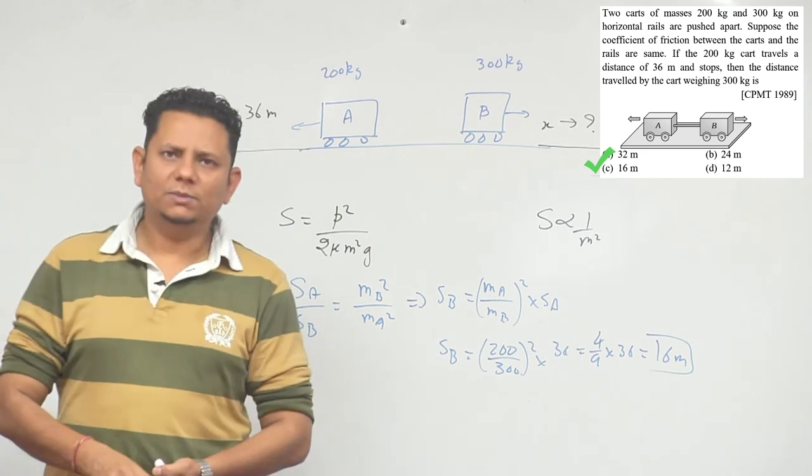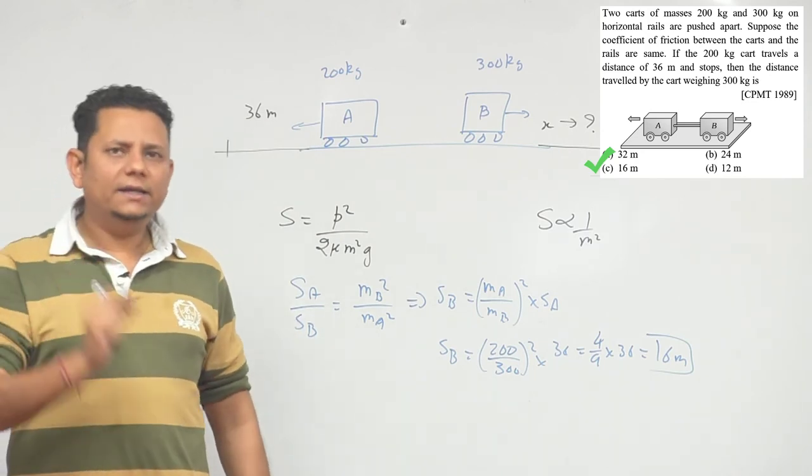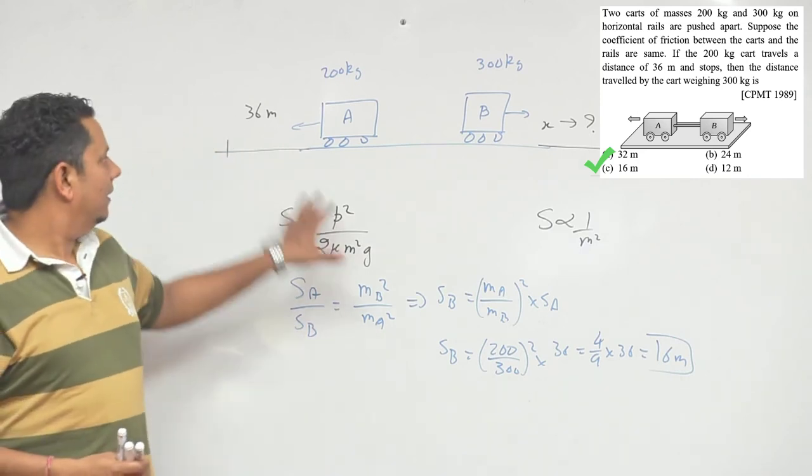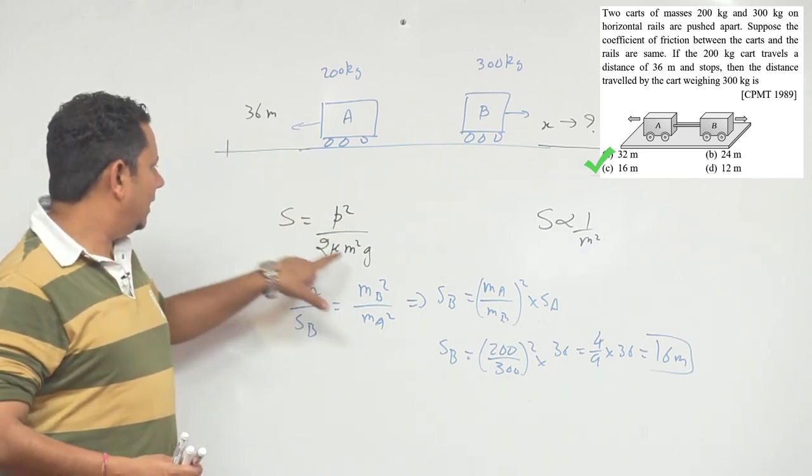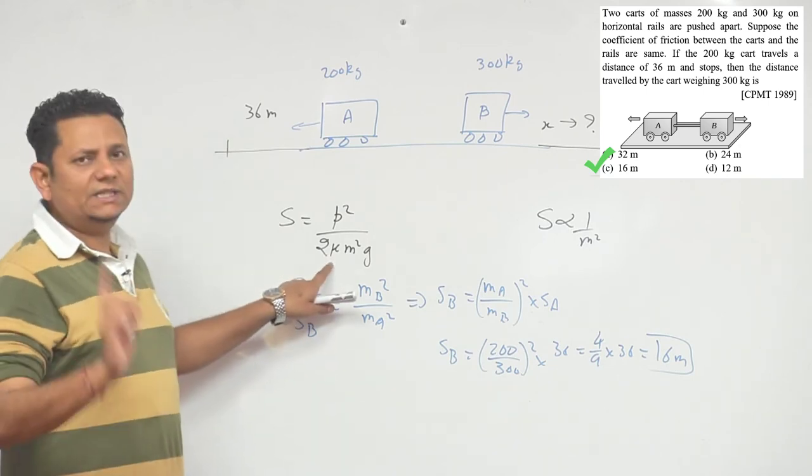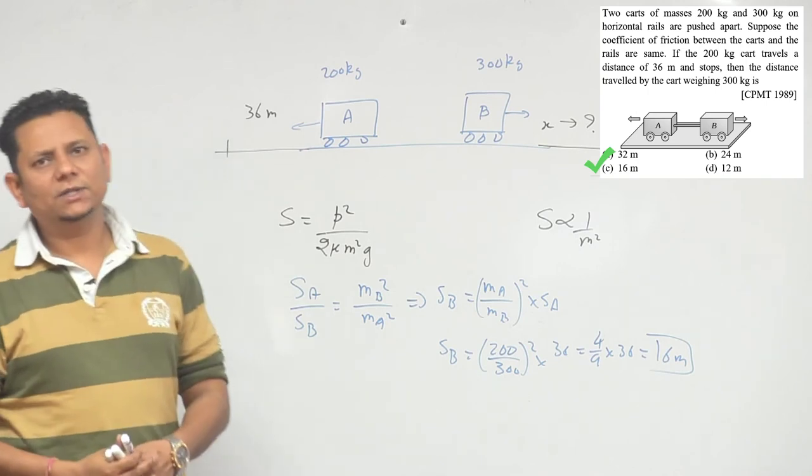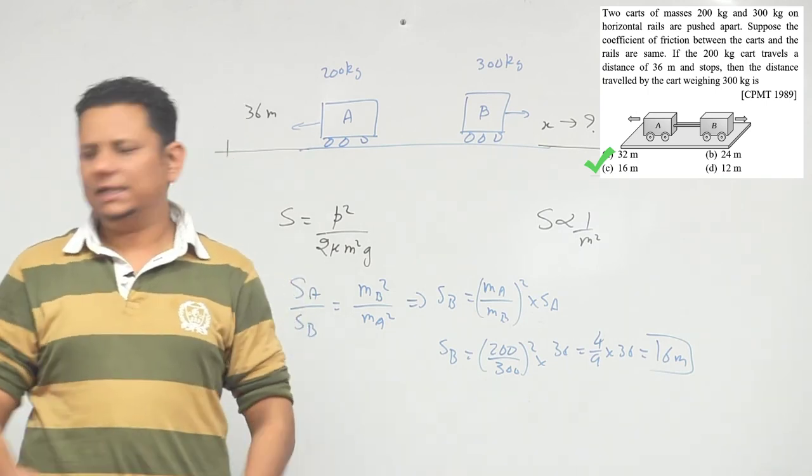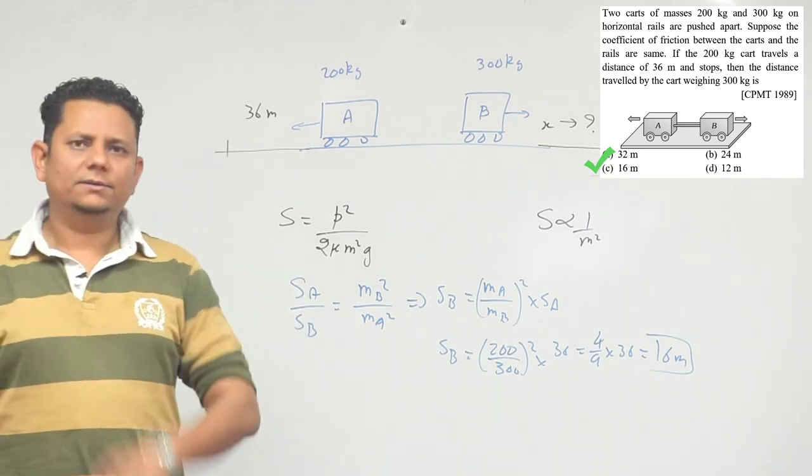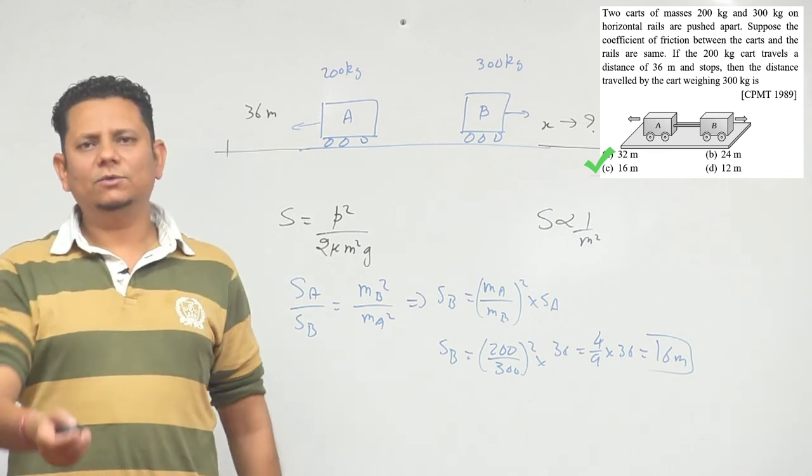So based on this we can say option number C would be the answer for this question. But there should be another condition here - if we are applying this condition that s is inversely proportional to m square, in that case friction is given same but we are also assuming momentum is same. So keep this in mind. All right, so option number C in this condition would be the right answer.